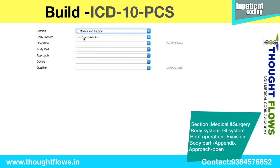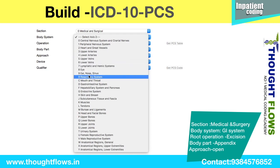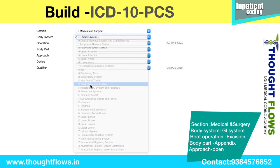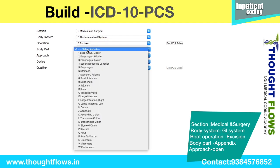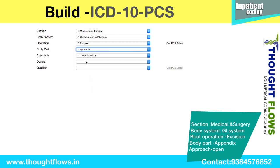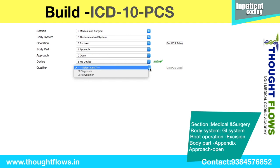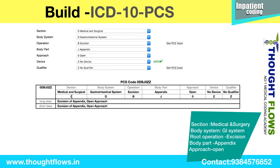For the Section, since it is surgery, we select 0, which is Medical and Surgical. For Body System, since the appendix belongs to the gastrointestinal system, we select GI. For Root Operation, since they removed it, we select Excision. For Body Part, we select Appendix. For Approach, we select Open. For Device, there is no device for this procedure, so it is None. For Qualifier, we select No Qualifier to get the complete PCS code. You can see the complete code showing the Section, Body System, Root Operation, Body Part, Approach, Device, and Qualifier — which is the excision of appendix, open approach.